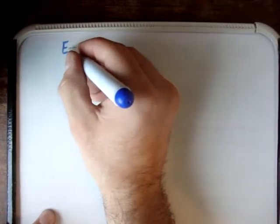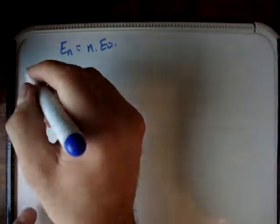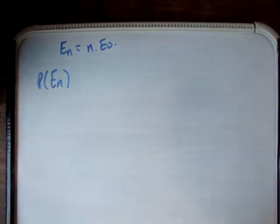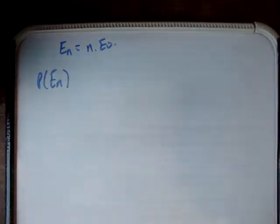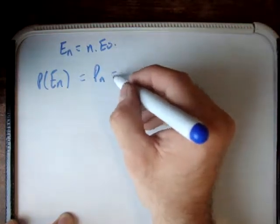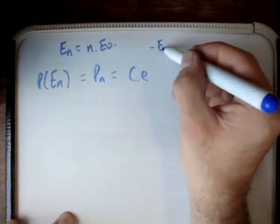So let's go ahead and work out this blackbody curve. The first thing we need to define is that the energy E_n is equal to n times E₀. Now we know at this stage that the probability of being at energy level E_n is written as P(E_n), and that's equal to a constant times the exponential of the Boltzmann factor.